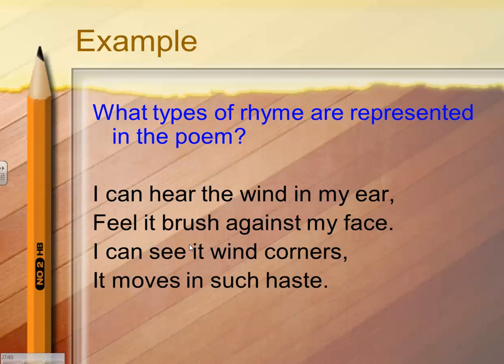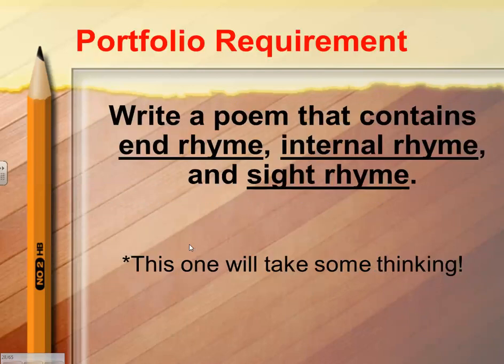What type of rhyme is represented in this poem? Take a second and see if you can figure it out. There are three different types we've already talked about in this poem — see if you can figure it out. Write a poem that consists of end rhyme, internal rhyme, and sight rhyme. This is going to take some thinking, and it's a challenge for some students, but most students were able to do this.